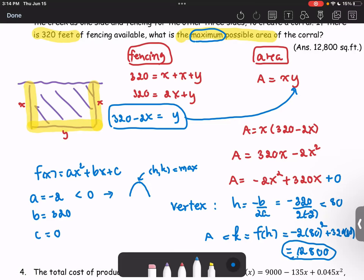Another way we can do that is looking for k using the formula: k is 4ac minus b squared divided by 4a. We should get the same value.